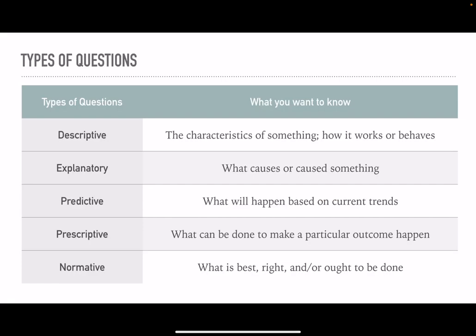Generally, we can sort research questions into five categories: descriptive, explanatory, predictive, prescriptive, and normative. A descriptive question is about the characteristics of something. For example, a research question about what my office is like would lead me to describe its size, shape, how the doors work, and the practices that go on in it. This can be tremendously useful because if you don't have a good description of something, you can't really ask any of the other questions. Sometimes researchers do descriptive research because they're legitimately interested in the answer, and sometimes because you need the description before you can do anything else.